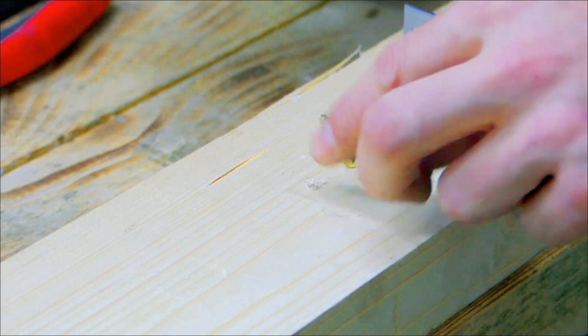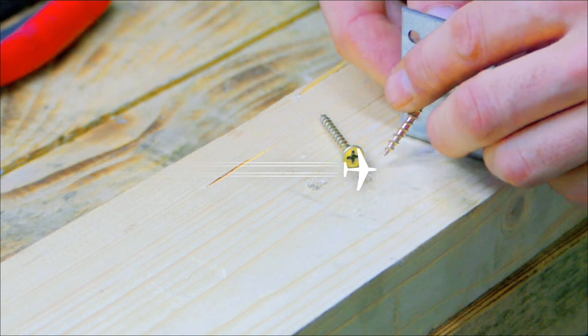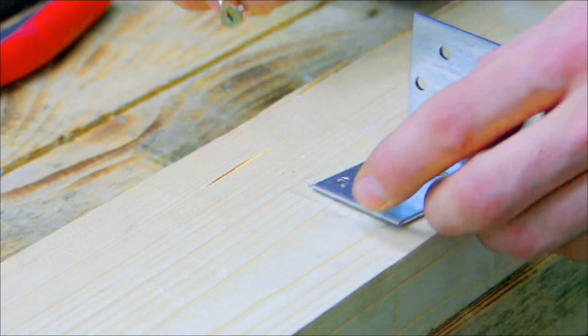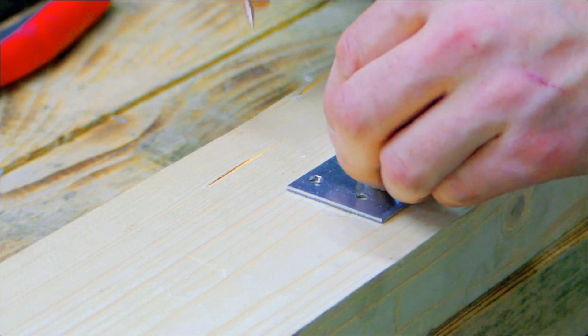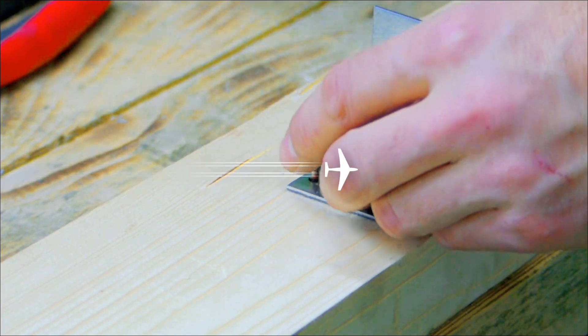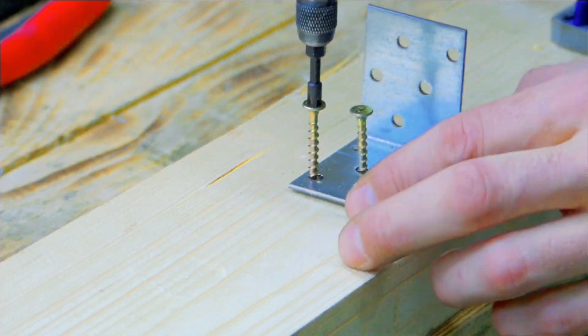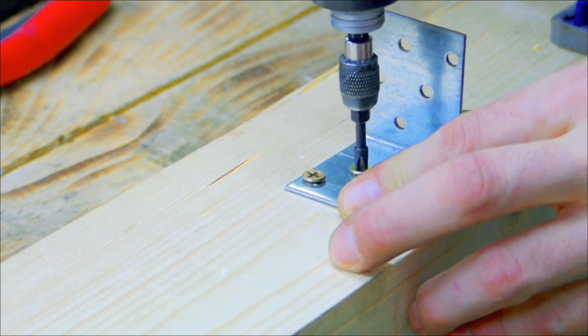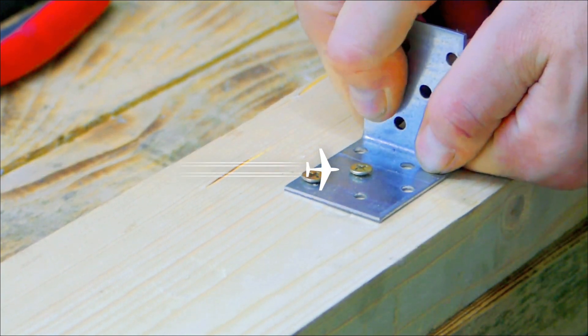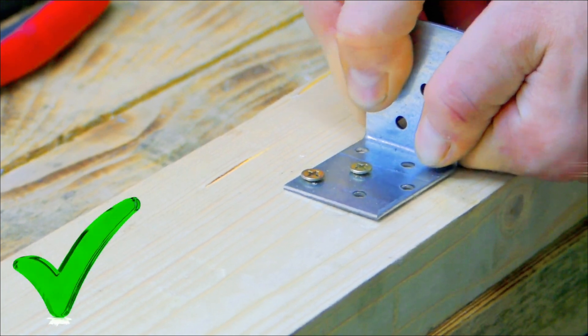Wood may also refer to other plant materials with comparable properties and to material engineered from wood or wood chips or fiber. Wood has been used for thousands of years for fuel, as a construction material, for making tools and weapons, furniture, and paper. More recently, it emerged as a feedstock for the production of purified cellulose and its derivatives, such as cellophane and cellulose acetate.